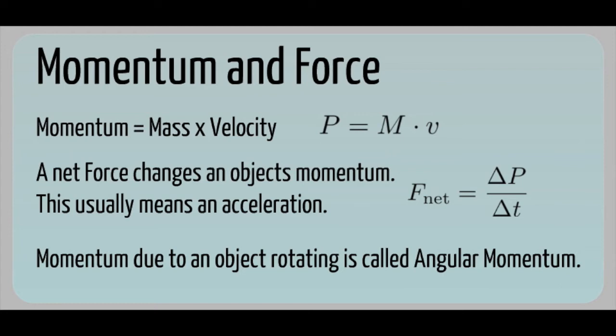Isaac Newton, who we talked a little bit about in the last lecture, showed us that the net force acting on an object is equal to its change in momentum over the time in which that change takes place. That usually means that the object will be accelerating. Objects that are rotating can also have a momentum. The momentum due to a rotating object is called its angular momentum.